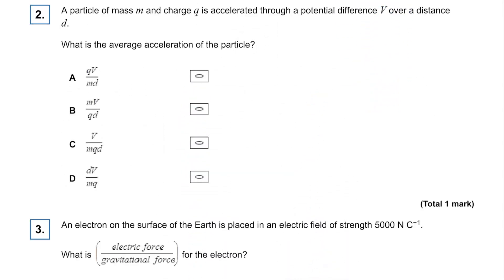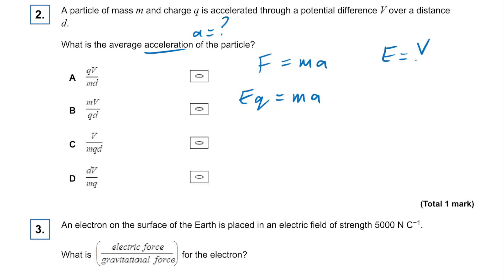Question two: we have mass M, charge Q accelerated to a potential difference. We're looking for average acceleration. We know that force due to the electric field equals MA, and force from an electric field equals EQ. But we have potential difference, not field strength. So electric field strength equals V over D. Popping that in: VQ over D equals MA, so acceleration equals VQ over MD. The answer is A.